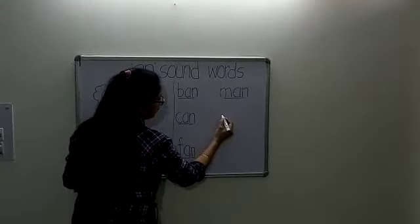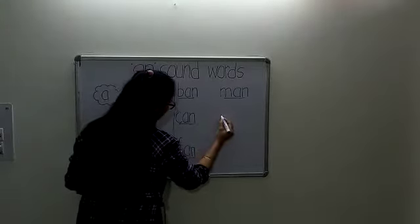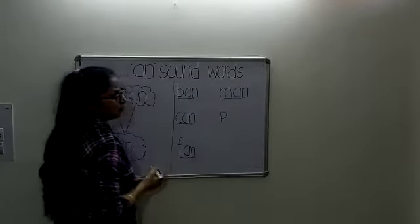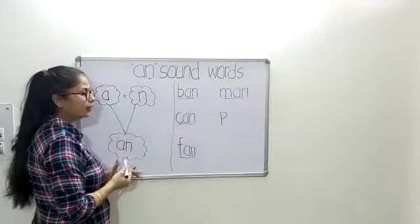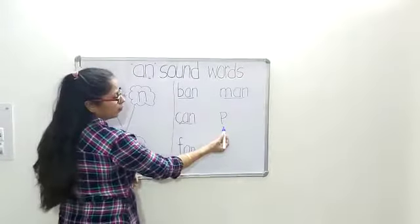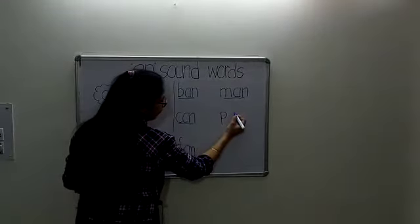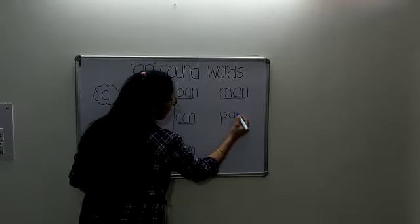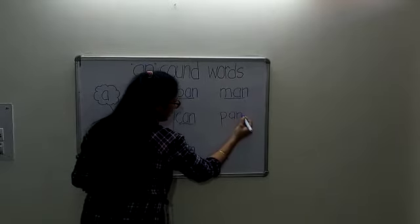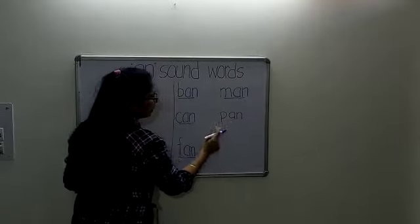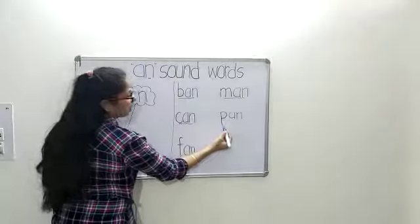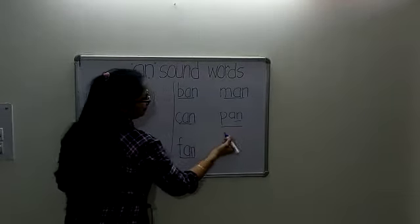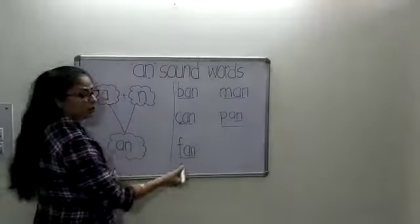The next letter is P. As we know, the phonetic sound of P is P. When we add the sound of AN into the phonetic sound of P, it becomes P and AN — it becomes PAN.